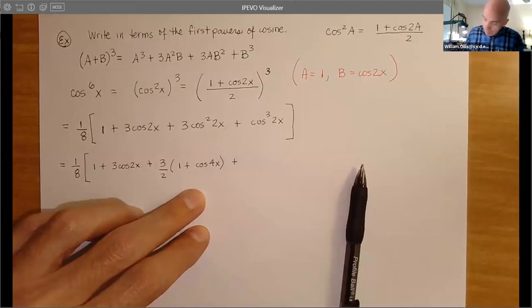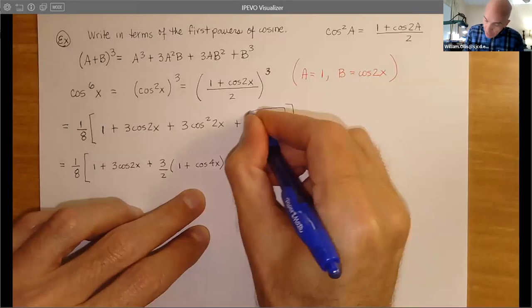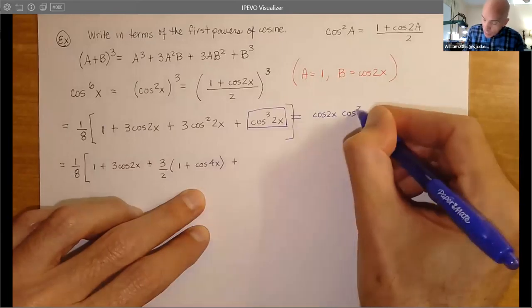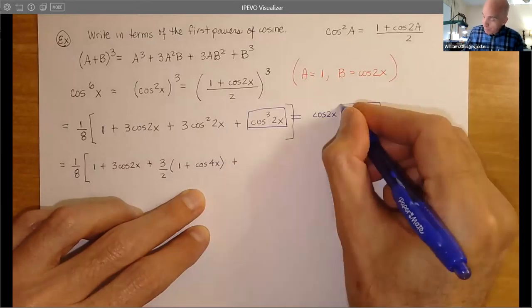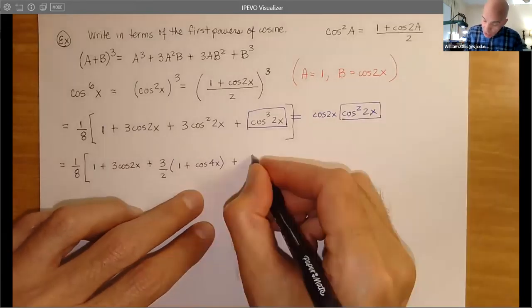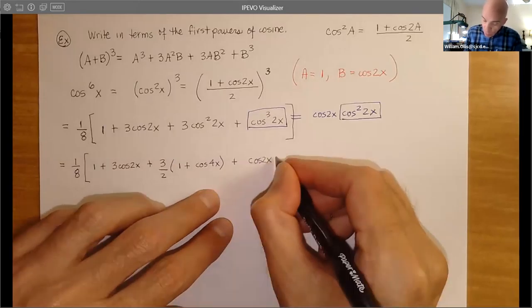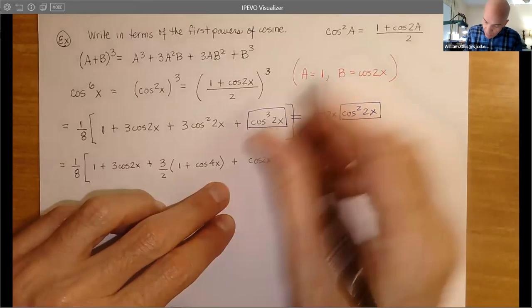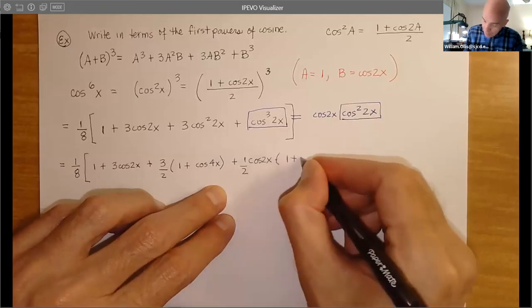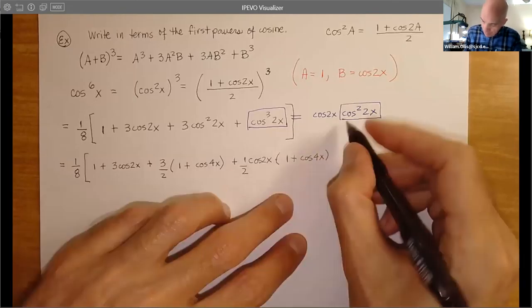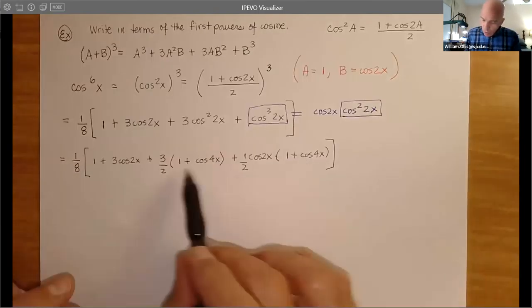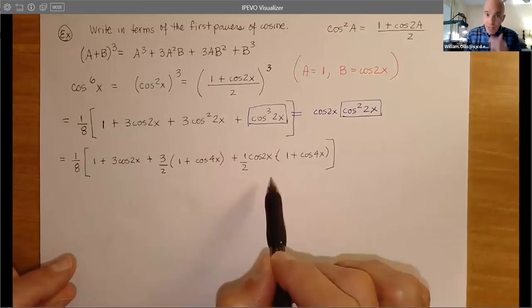Let's do a little sidebar for cos³(2x). That equals cos(2x) times cos²(2x). That's the first power, but cos²(2x) is the second power, so we need to apply the formula again. This will be cos(2x) times (1/2)(1 + cos(4x)). At this point, you're thinking it looks like we're done — we just have first powers here, so let's multiply it out and collect everything.